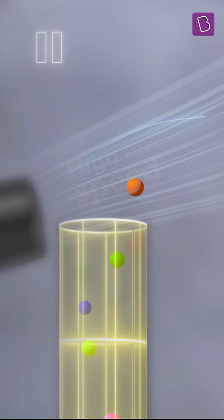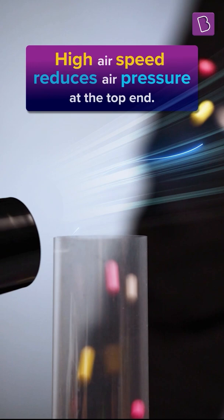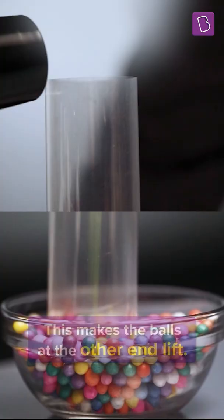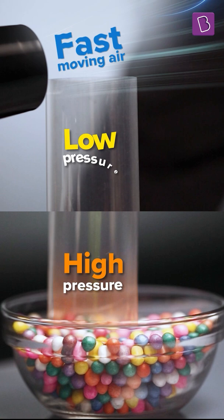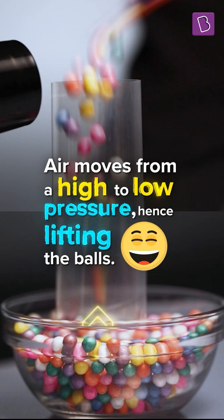Apparently because of the high speed of air there's a reduction in pressure at one end of the pipe. Now this is making the balls lift to the other end. So there is a low pressure and there is a high pressure. Right? Air moves from a high pressure to a low pressure and that is lifting the ball.